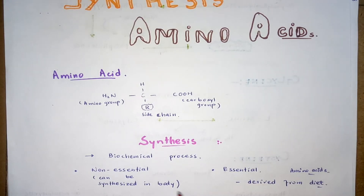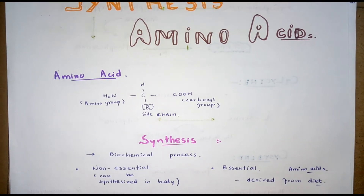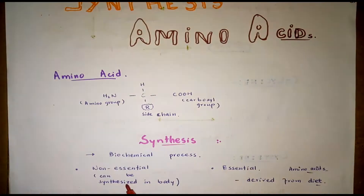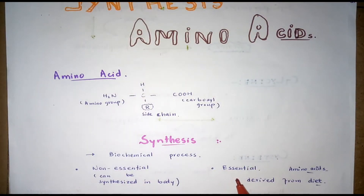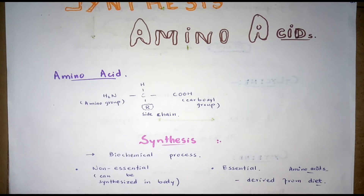Amino acid synthesis is a set of biochemical processes by which various amino acids are derived from different compounds. The 10 amino acids that can be synthesized in our body are called non-essential amino acids. The remaining 10, which are nutritionally essential as they are derived from the diet, are called essential amino acids. All 20 protein amino acids are derived from intermediates in glycolysis, the citric acid cycle, or the pentose phosphate pathway.